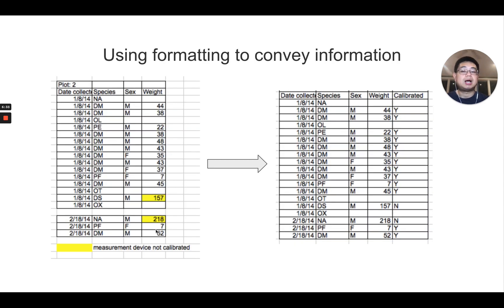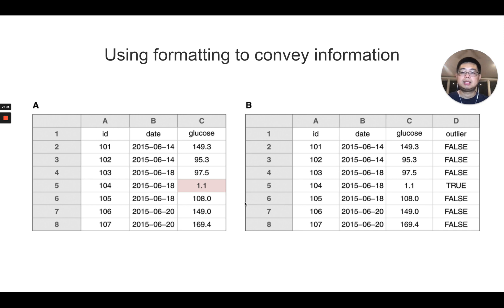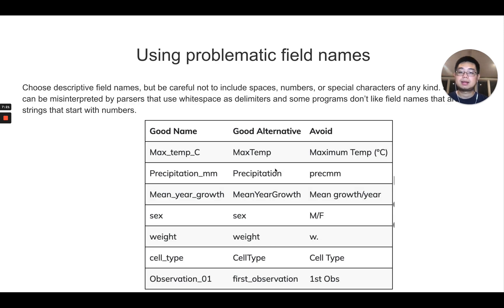And the other really common problem is using formatting to convey information. For example, here you highlight this cell yellow to denote that those devices are not calibrated. To avoid that, because programs in R or Python don't understand the meaning of those colors, you add another column here and use yes or no to denote whether it's calibrated or not. So this is another example. For this glucose value here that's an outlier, 1.1, then use this color to highlight it. We need to avoid that. You add another column here called outlier and use true or false to denote whether it's an outlier.